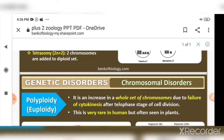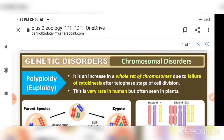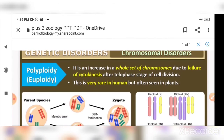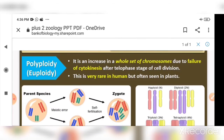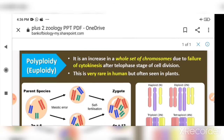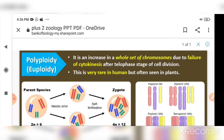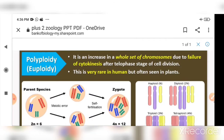In chromosomal disorders, there is one more condition — polyploidy. 'Poly' means many and 'ploidy' means set. It is also known as euploidy, and it refers to an increase in the whole set of chromosomes.